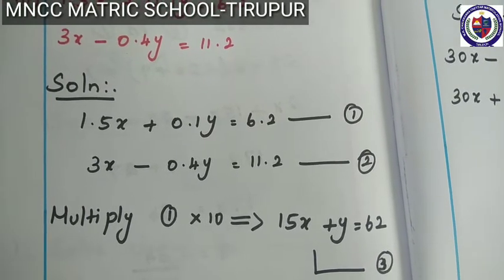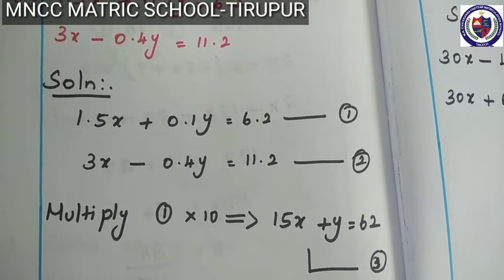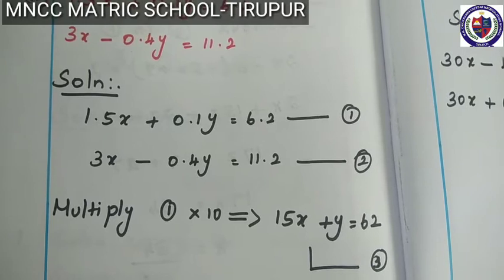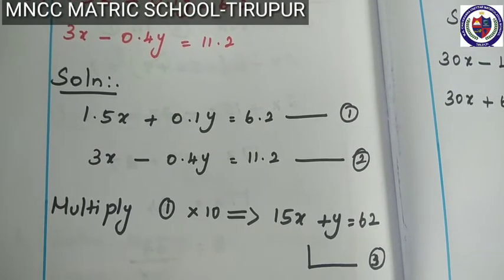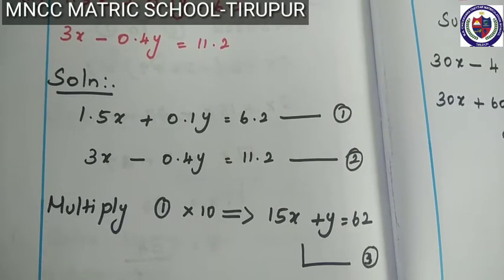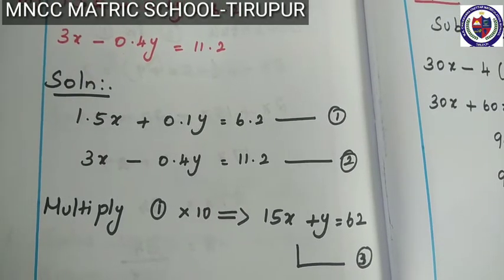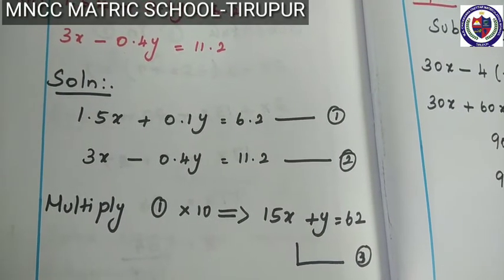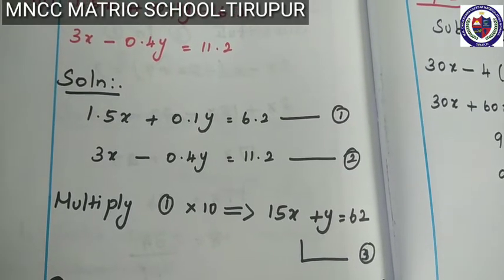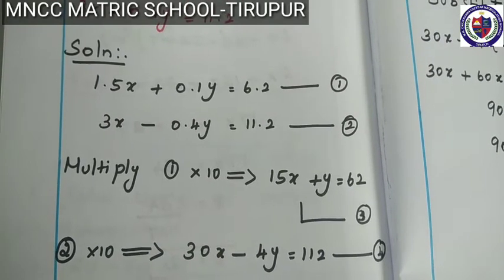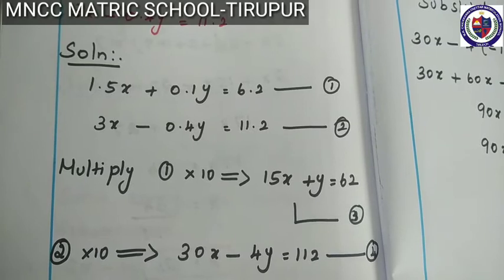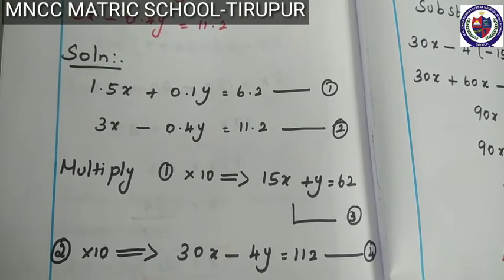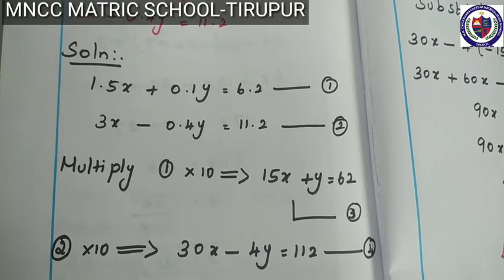Multiply equation number 1 by 10 to remove the decimals. Since 1.5 has one decimal place, multiplying by 10 removes it. So 1.5x into 10 gives 15x, plus 0.1 into 10 gives y, is equal to 6.2 into 10 which is 62. This is equation number 3. Similarly, multiply equation 2 by 10: 3 into 10 gives 30x, minus 0.4 into 10 gives 4y, is equal to 11.2 into 10 which is 112. This is equation number 4.